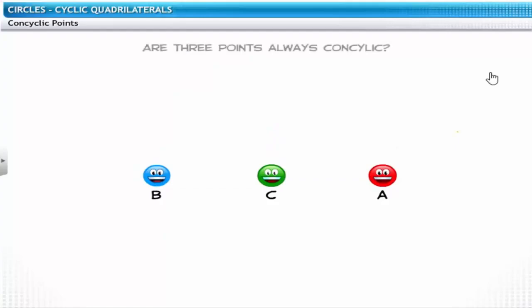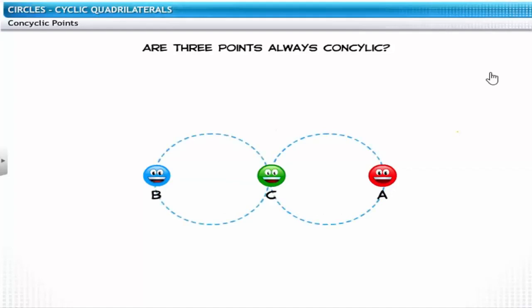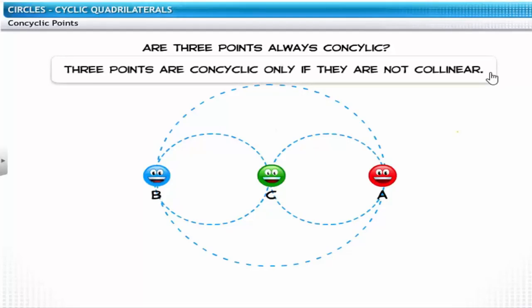Can we conclude that three points are always concyclic? No, this does not always hold true. For example, consider three collinear points — a circle can be drawn through any two points but the third will fall either inside or outside that circle. Based on this observation, we can conclude three points are concyclic only if they are not collinear.